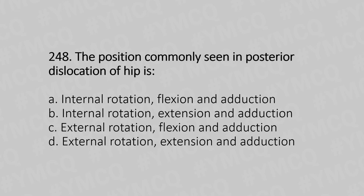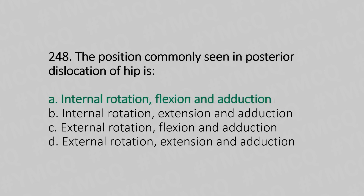Question 248: The position commonly seen in posterior dislocation of the hip is — Option A: internal rotation, flexion and adduction. Option B: internal rotation, extension and adduction. Option C: external rotation, flexion and adduction. Option D: external rotation, extension and adduction. The answer is Option A, internal rotation, flexion and adduction.